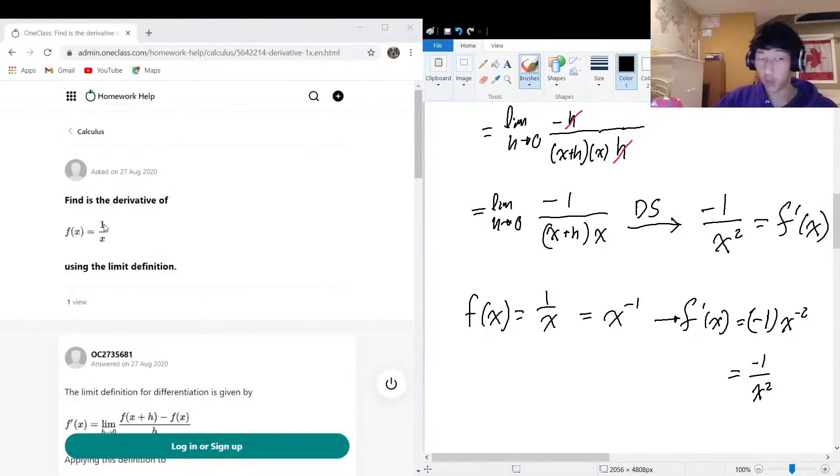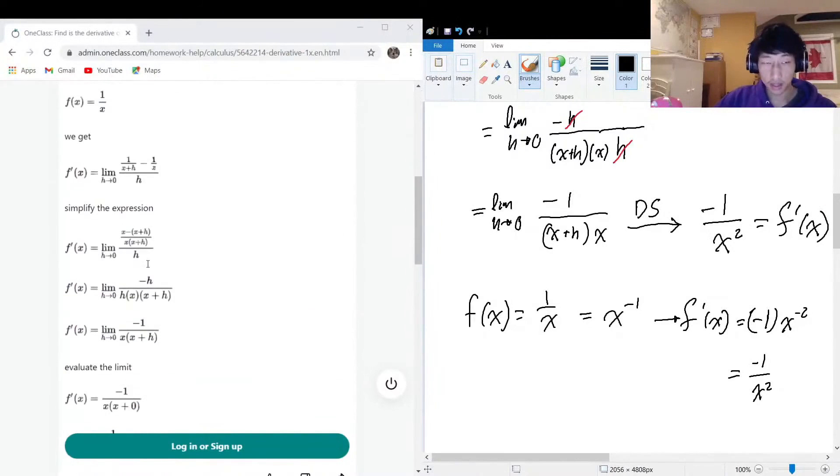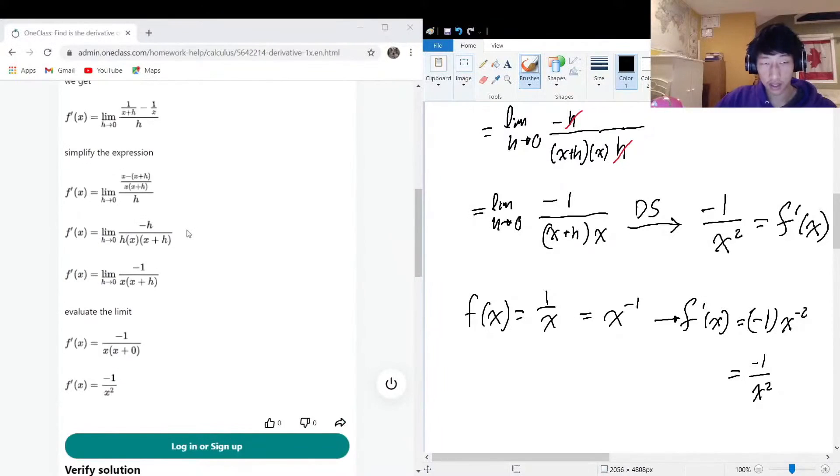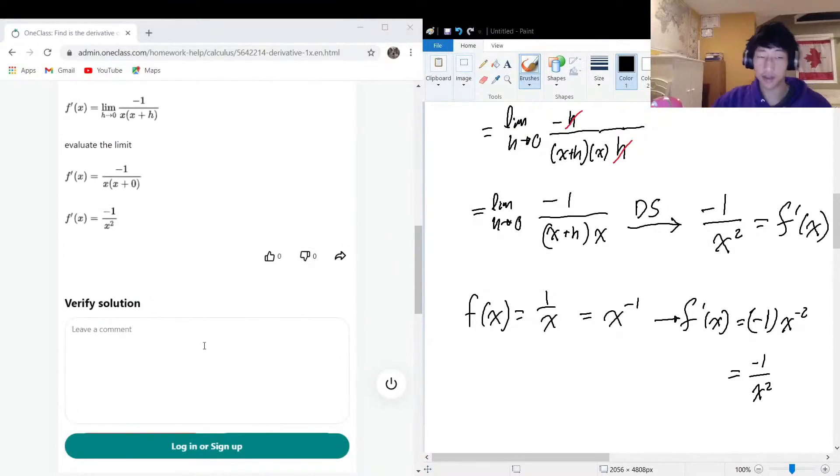So yeah, that would be how you find the derivative of one over x using the limit. Sounds good. And yeah, it came to the same conclusion, did the same thing and had the same success. So the above solution is good and we proved that.